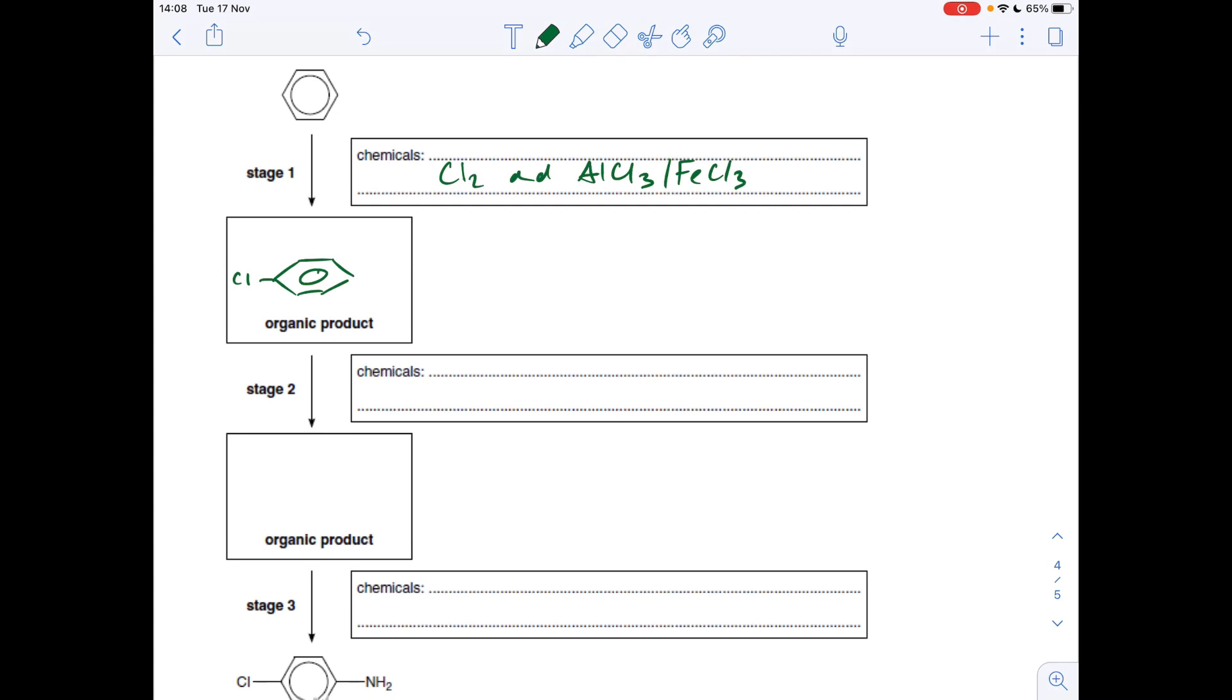So we now need to put, effectively we need to get an NH2 group onto the benzene ring. We can't do that in one step, we saw that in the previous question. So we're going to nitrate it. So to do that, because this is benzene effectively and not phenol, so to do that we need concentrated nitric acid, concentrated sulfuric acid, and you also need 50 degrees C, 50 to 55 degrees C, but it only wants the chemicals, so that wouldn't be necessary there.